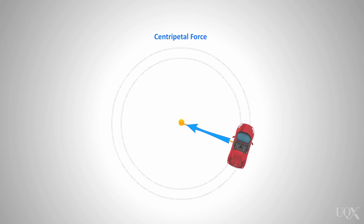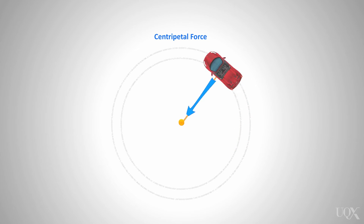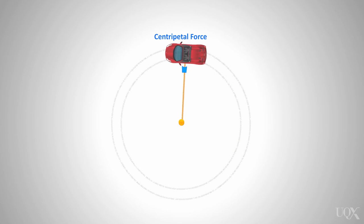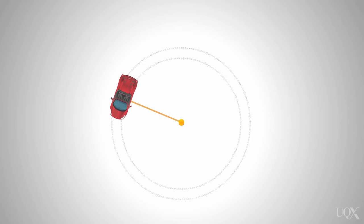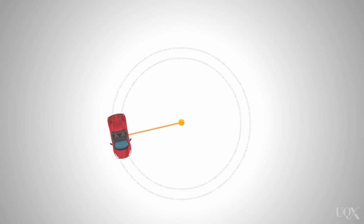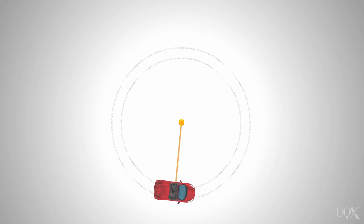The centripetal force applied to turn a bend in a car is the friction force applied between the car tyres and the road. This force would be directed towards the centre of an imaginary circle.